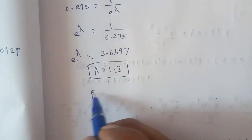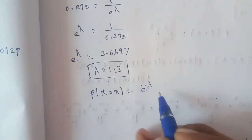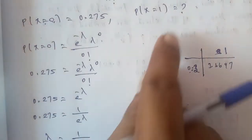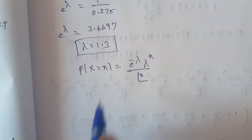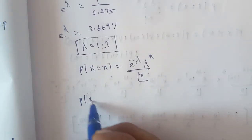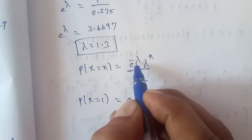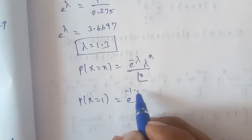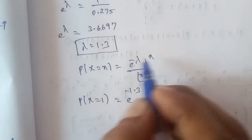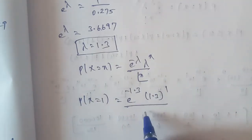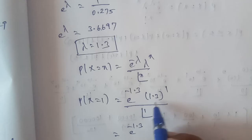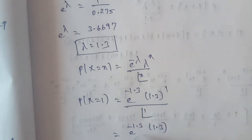Now, P of X equal to 1 is equal to e power of minus lambda, multiplied by lambda power of X, divided by X factorial. Substituting lambda equal to 1.3 and x equal to 1: P(1) equals e power of minus 1.3, multiplied by 1.3 power of 1, divided by 1 factorial. Since 1.3 to the power 1 is 1.3 and 1 factorial is 1, this simplifies to e power of minus 1.3 multiplied by 1.3.